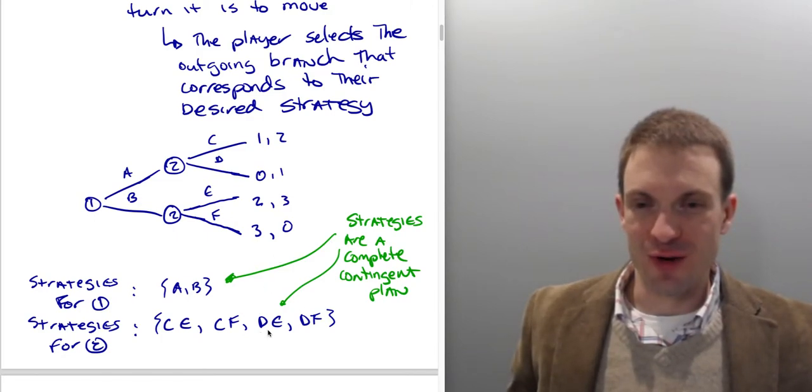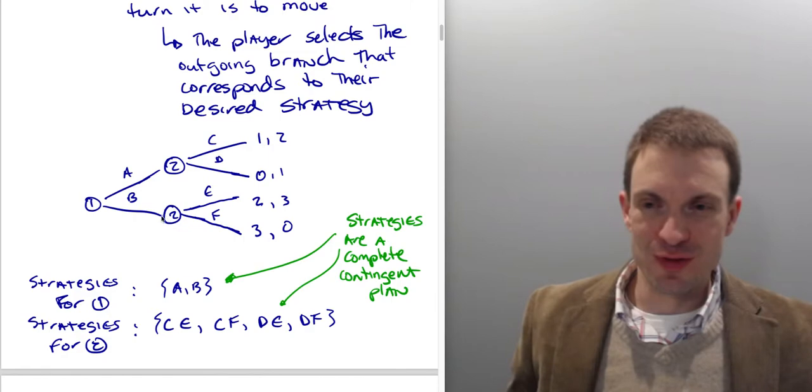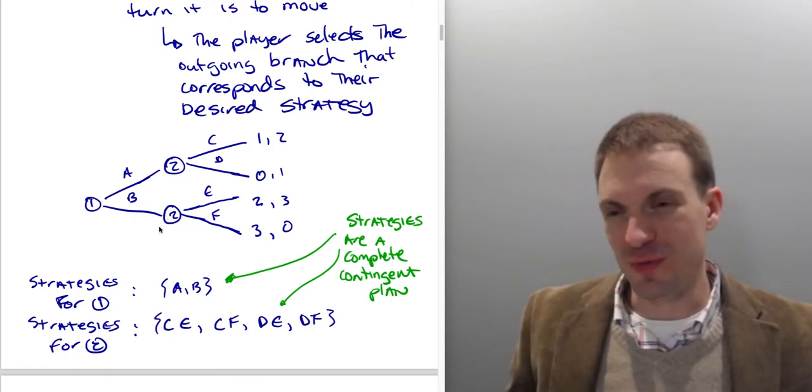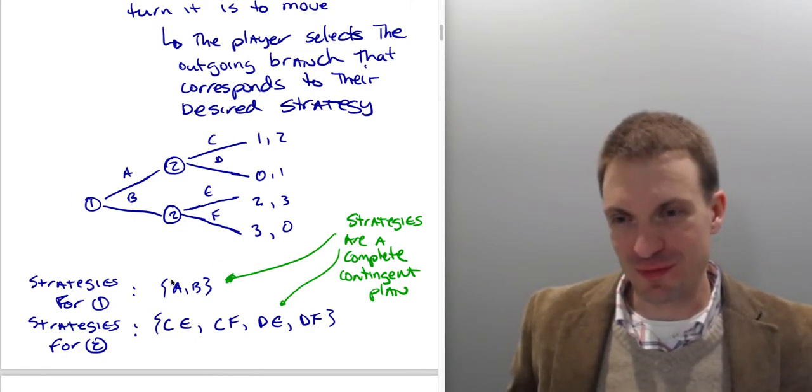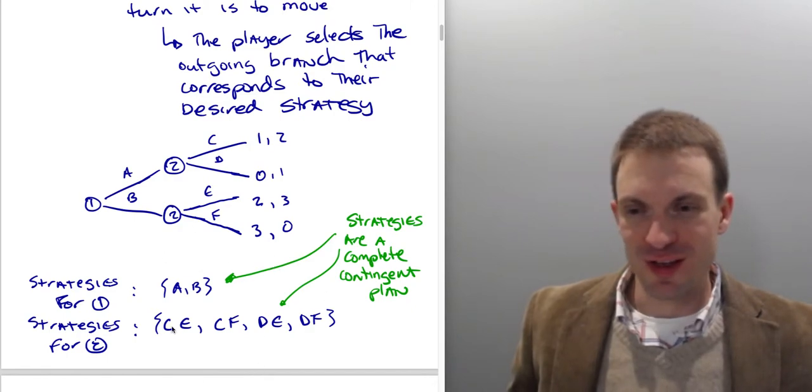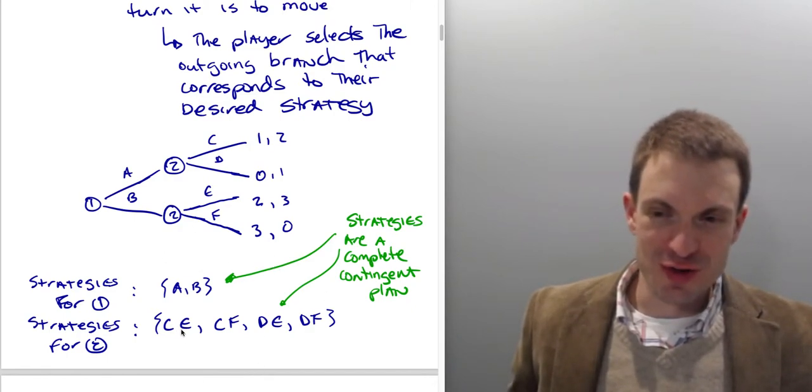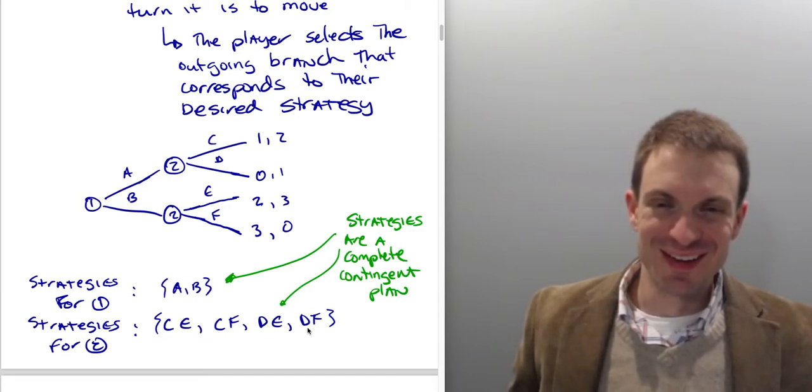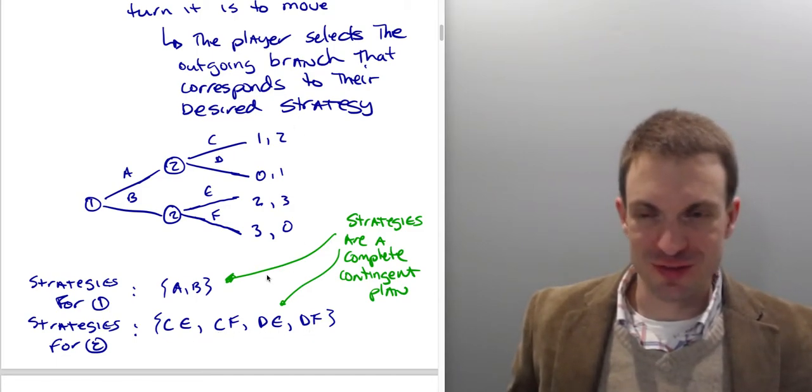You could write this as E,C, F,C, E,D, F,D, and that's going to pick out the exact same type of behavior.